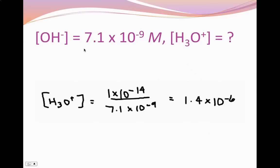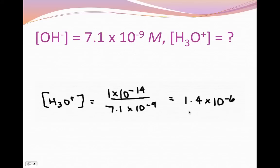I can do the same thing in reverse. If [H₃O⁺][OH⁻] = 1×10⁻¹⁴, and I want to find the hydronium ion concentration, I divide both sides by [OH⁻]. So [H₃O⁺] = Kw divided by [OH⁻]: 1×10⁻¹⁴ divided by 7.1×10⁻⁹ equals 1.4×10⁻⁶. So my hydronium ion concentration is 1.4×10⁻⁶.